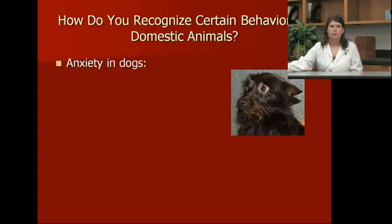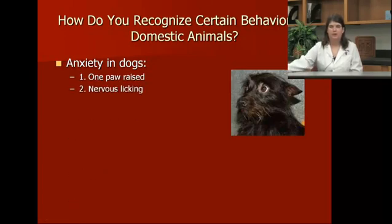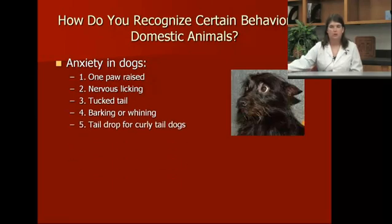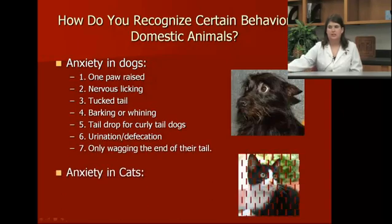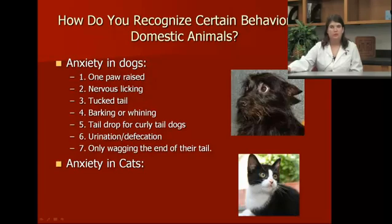An anxious or scared dog has one paw raised, is licking their face or paws a lot, has a tucked tail, and is barking or whining. If it's a dog with a curly tail, they'll drop their tail between their legs. They might urinate or defecate and are only wagging the end of their tail. Anxiety in cats can show a lot of the same things, but mostly their tail will be swishing, they'll be growling, and they'll have dilated, wide eyes.